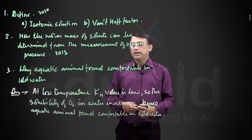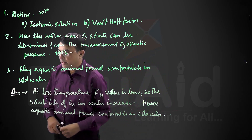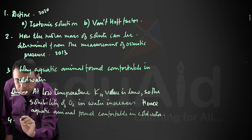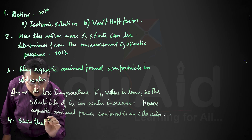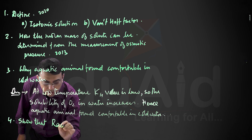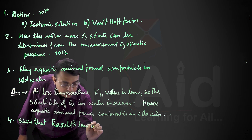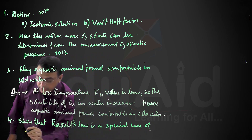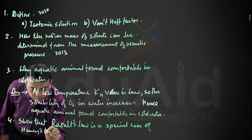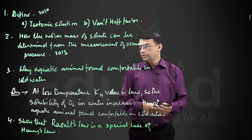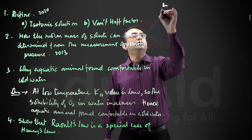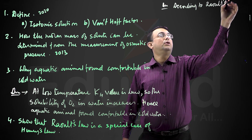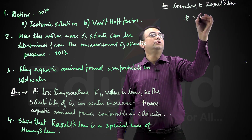Another question that may be asked is: Raoult's law is a special case of Henry's law. According to Raoult's law, p is equal to p-naught into x. That is the Raoult's law equation.